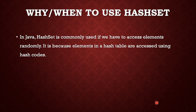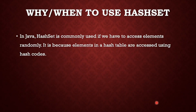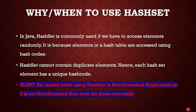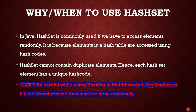Why and when to use HashSet in Java? HashSet is commonly used when we need to access elements randomly, because elements in a hash table are accessed using hash codes generated for each element. HashSet cannot contain duplicate elements, so each element has a unique hash code. We must be very careful when using HashSet in a multi-threaded application as it is not synchronized — synchronization must be done externally to avoid data-related issues. That's it for this video. Please like, share, and subscribe. Thanks for watching!